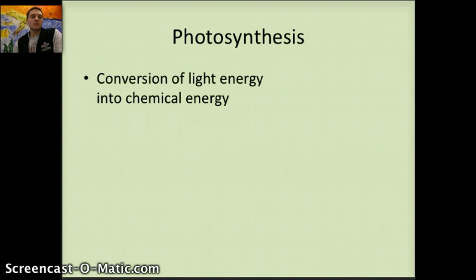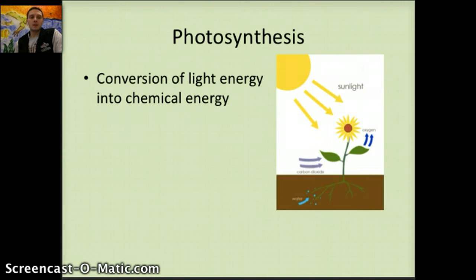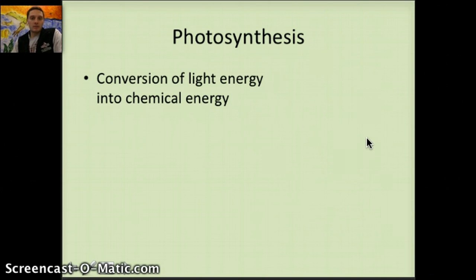So photosynthesis is the conversion of light energy into chemical energy. Very simple diagram here to show this: sunlight is used by plants, water is taken in, carbon dioxide is taken in, and plants give off oxygen and then sugar as a byproduct.